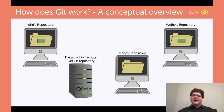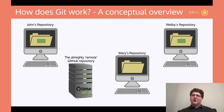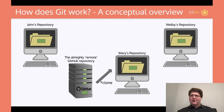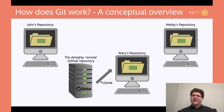Now let's say Mary was talking to Welby about the cool change he made to John's project, and she wanted to get involved too. Mary also clones the repository, just like Welby did. Once Mary clones the repository, everyone is back up to date. Mary can now contribute, and you can do this for 100 other developers as well. That's a conceptual idea of how Git works from the top level.